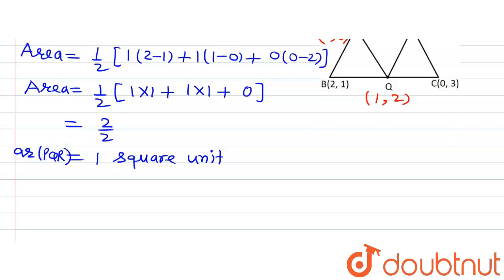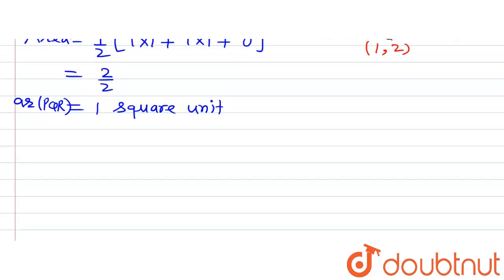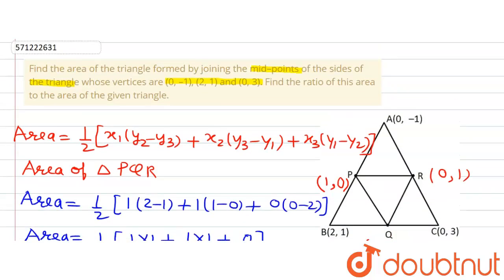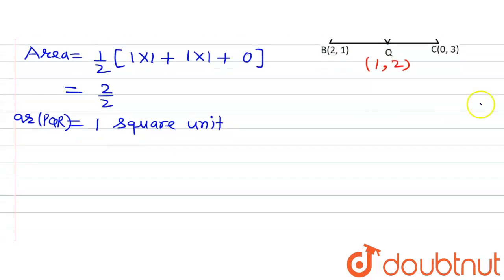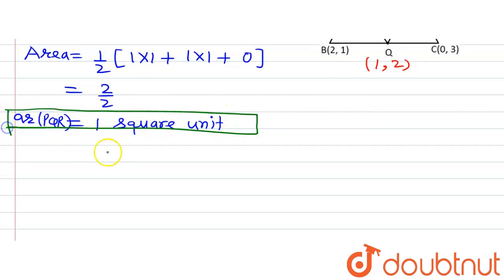This is the answer to the first part of the question — find the area of the triangle formed by the midpoints of sides AB, BC and CA. The area is 1 square unit. Now let us proceed to the second part.